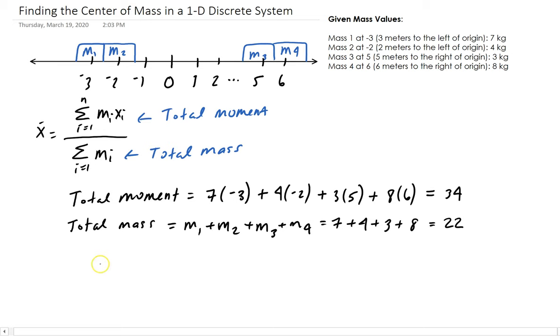Therefore, the center of mass, which is just a point in this one-dimensional system, will be 34—the total moment—divided by the total mass, 22, and that simplifies to 17/11.